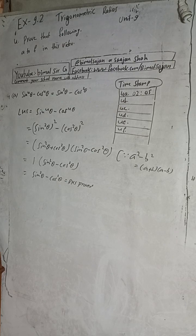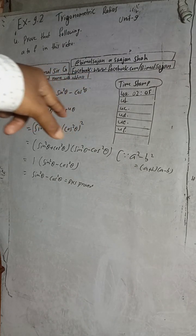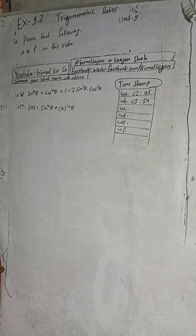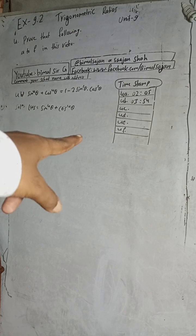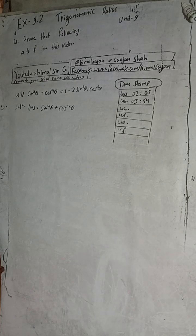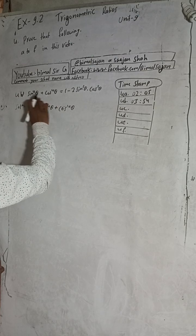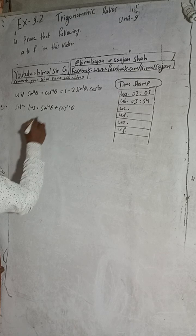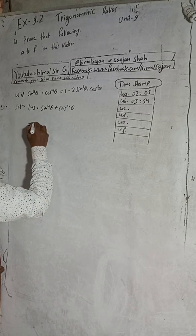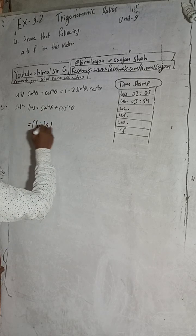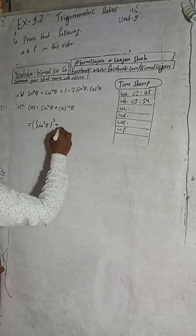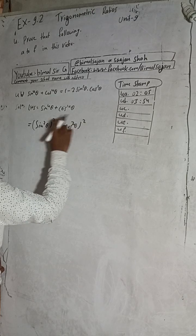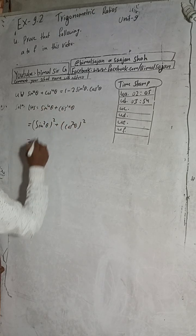This is question number 4b. The timestamp for this is 3 minutes 54 seconds. Here the LHS is sin⁴θ + cos⁴θ. We can write this as (sin²θ)² + (cos²θ)² — since two twos are four.